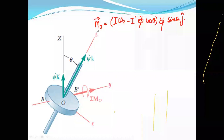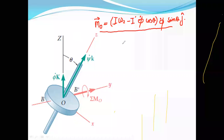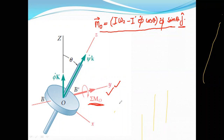For a gyroscope in steady precession, when the angle with respect to the z-axis is constant, when the angle of rotation of the disc is constant, and when the angle of rotation of the outer gimbal is constant, the summation of all the moments is given by this equation. The summation of all the moments is along the y-axis, that is along j-cap.